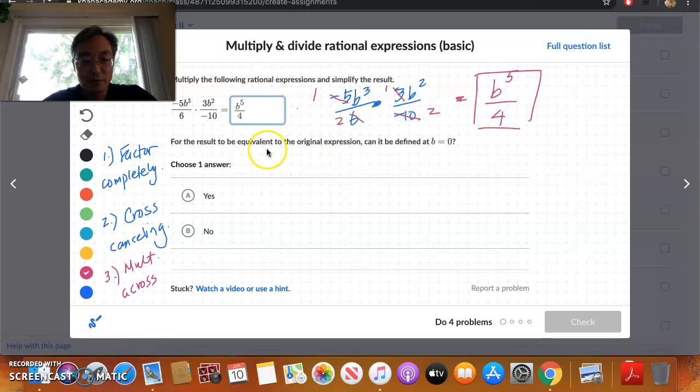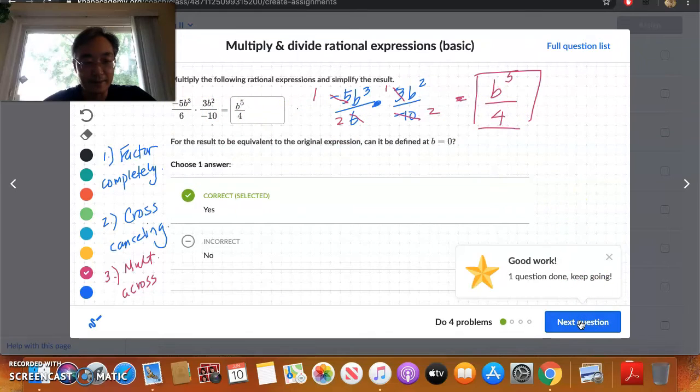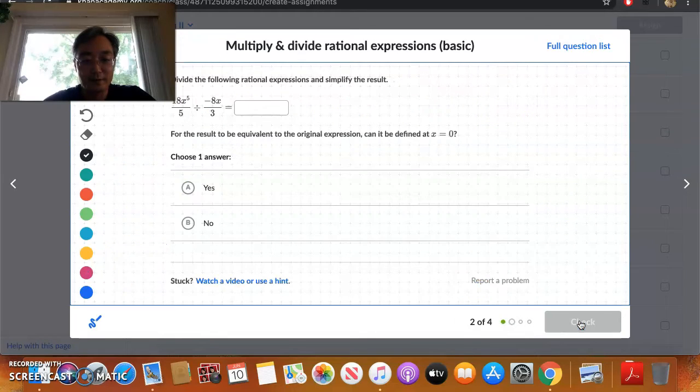And the question I ask you is, for the result to be equivalent to the original expression, can it be defined that b equals 0? Yeah, well, we have no problem with b being 0 because we see that we only have the b variables in the numerators, right? Same thing with the final expression. So we don't have to worry about anything being undefined. We only have numbers in the denominator. That is correct. Okay, see another one.